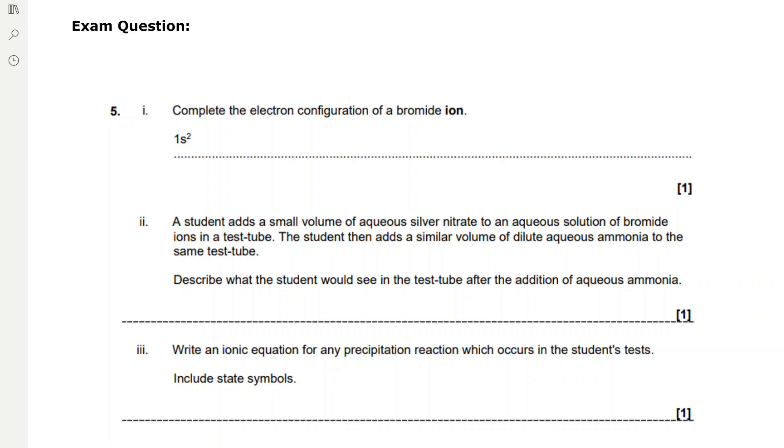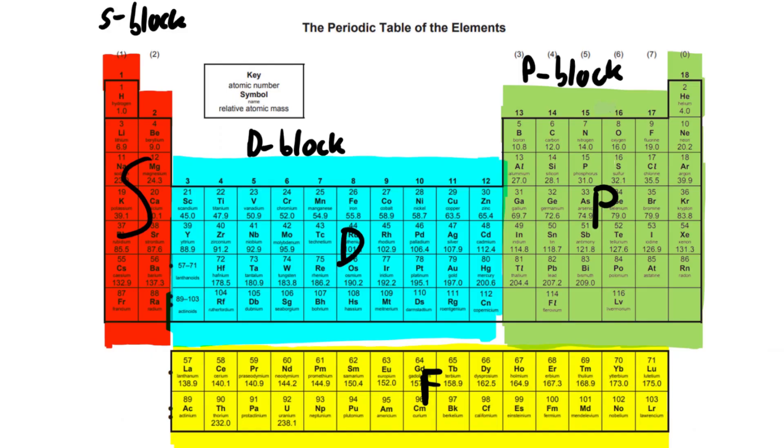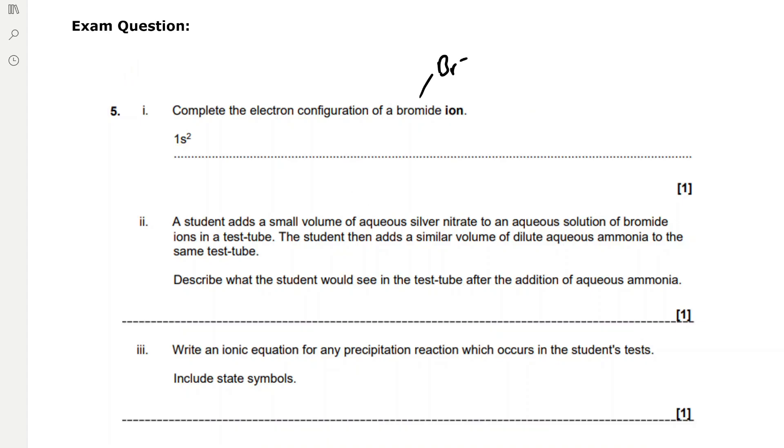They're asking us for the electron configuration of a bromide ion. That's BR-, which means we've gained an extra electron. If we have a look at the periodic table, we can see that bromine is in the P-block. The bromine atom has five electrons in the P-subshell. But since we're gaining an extra electron, we're going to have six electrons in the P-subshell.